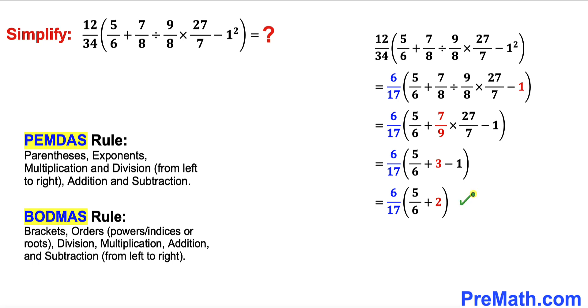As you can see in this next step I have replaced this part by 2 over here. Now let's focus on this whole thing inside this parentheses. Here I have added these numbers and simplified and it turns out to be 17 divided by 6.